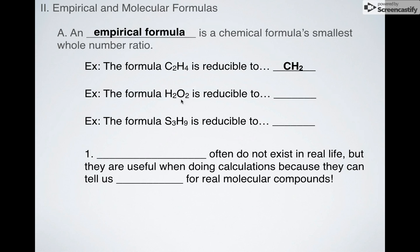H2O2, I can divide both of these by two, and that can just give me HO. S3H9, again, I can take those and reduce those to just SH3. Now, again, empirical formulas often don't exist, but they can be extremely useful when we're trying to do calculations because they can be used to find the mole ratio for real molecular compounds.